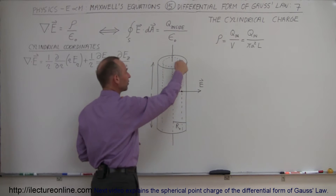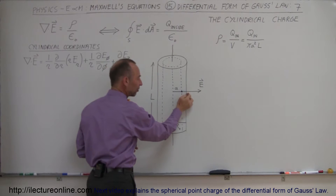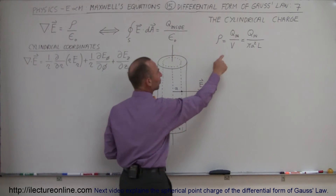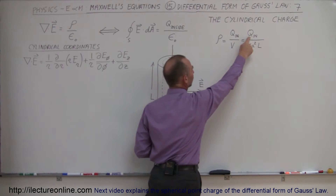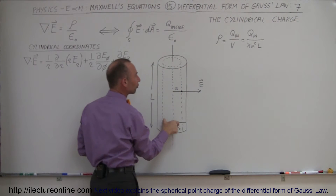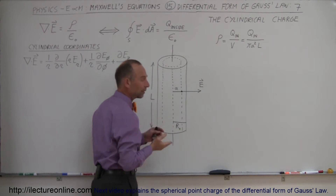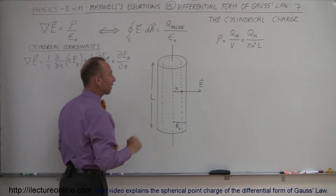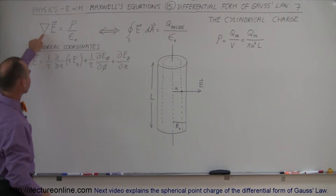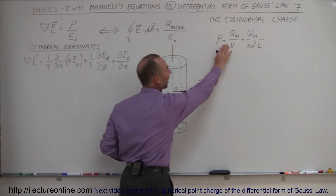If we're just going to consider this small segment inside the cylinder, because we want to figure out what the electric field strength is right there — not at the very edge, but somewhere inside the cylinder — we only consider the charge within the Gaussian surface. So the charge inside the Gaussian surface divided by the volume equals Q divided by pi A squared L, where A is the radius of the Gaussian surface and L is the length. The differential form of Gauss's Law says that the divergence of the electric field equals the charge density divided by epsilon sub naught.